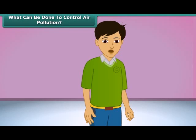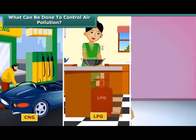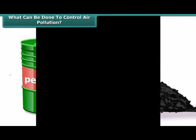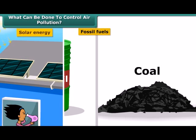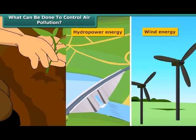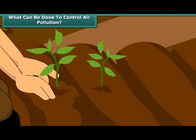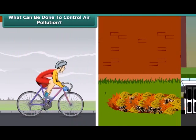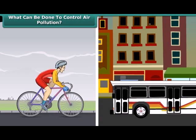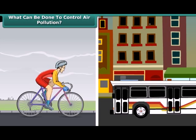What should we do to reduce air pollution? We can use clean fuels such as CNG, LPG, and unleaded petrol. Instead of fossil fuels, we can use solar energy, hydropower, and wind energy. We can also plant new trees. Rather than burning dry leaves, we can put them in a compost pit. We can walk more, switch to bicycles for short distances, and use public conveyances.